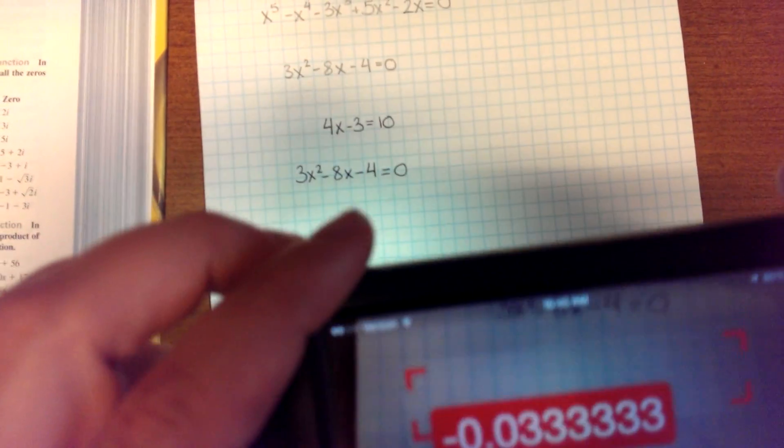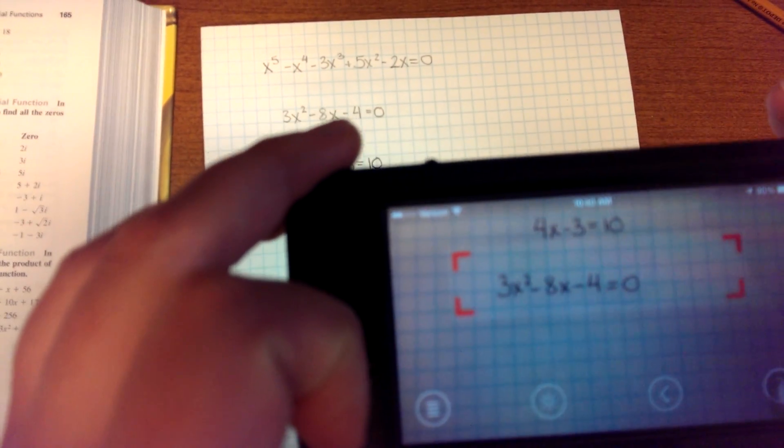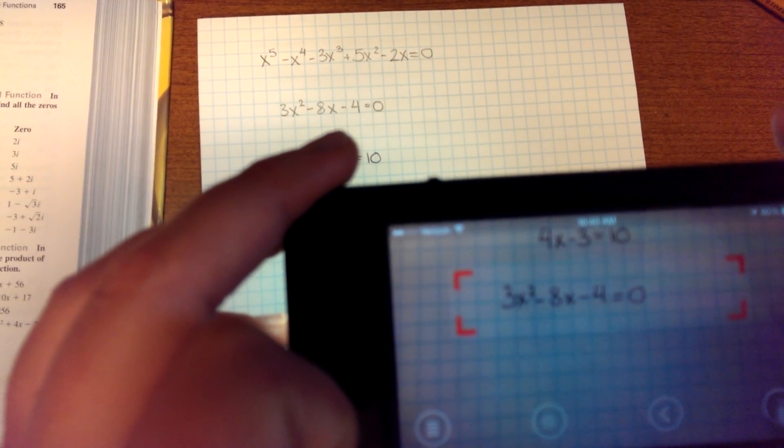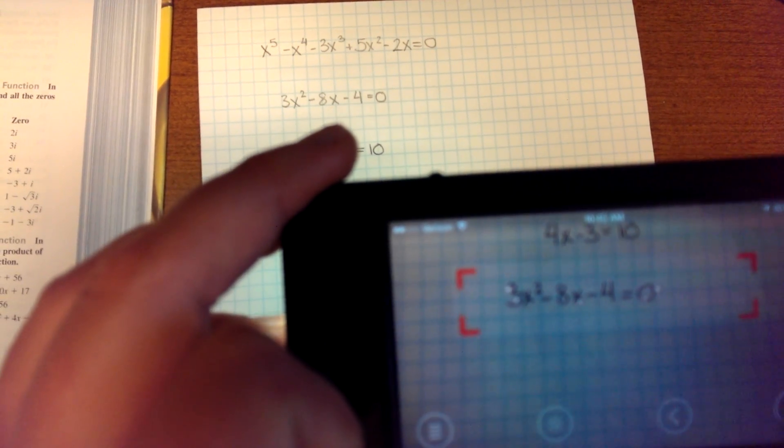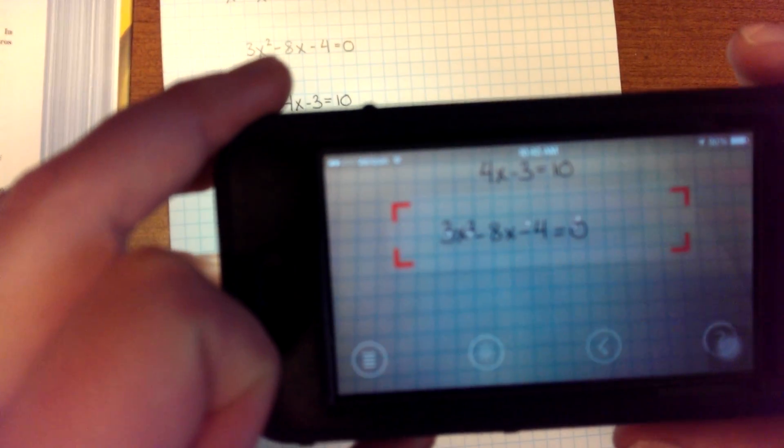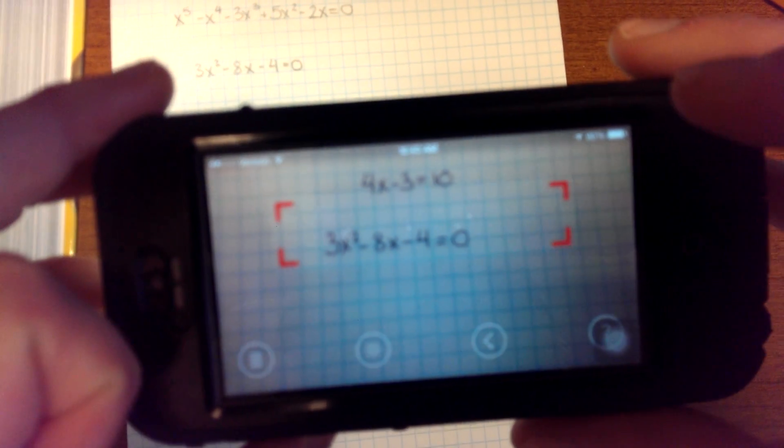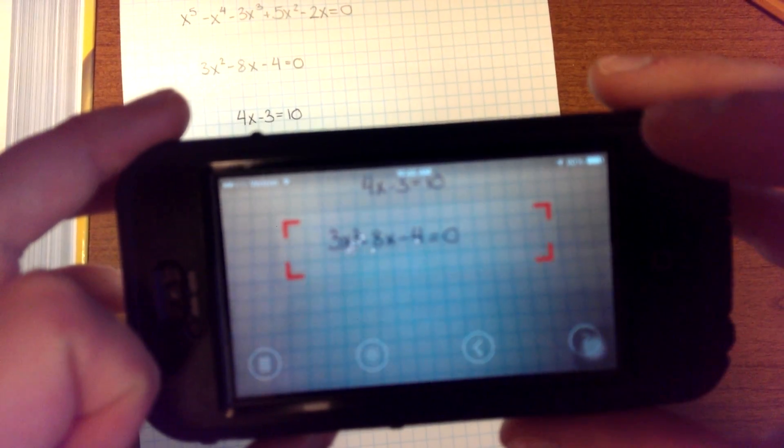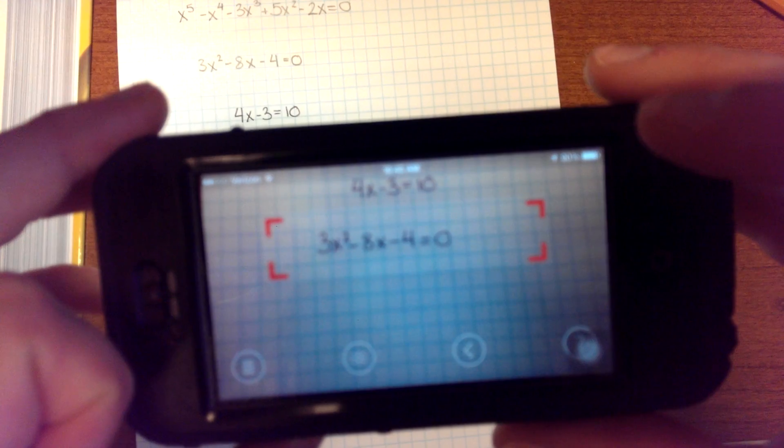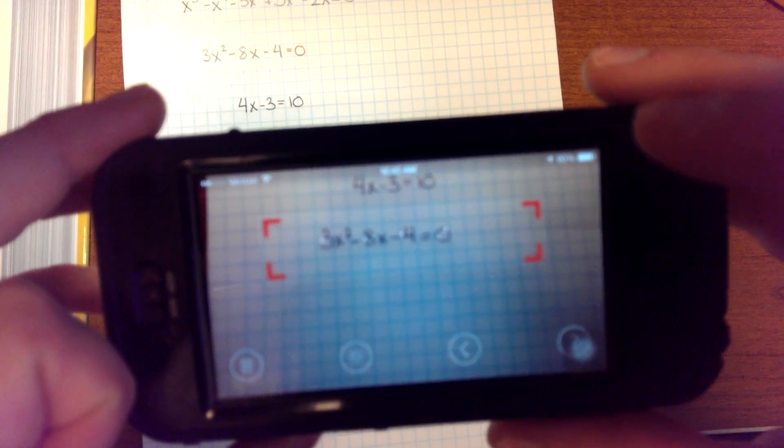Let's go one down to a quadratic. 3x squared minus 8x minus 4 equals 0. We're trying to hold very steady. And nothing's happening.